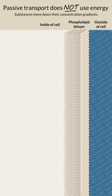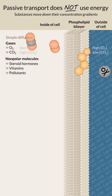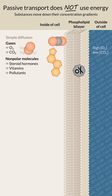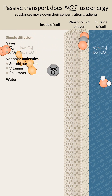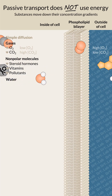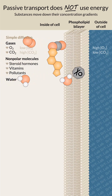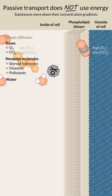Passive transport does not use energy because substances move spontaneously down their concentration gradients. Gases and hydrophobic molecules diffuse easily through the cell membrane. Water molecules are small enough to squeeze through the phospholipid bilayer, but the hydrophobic core impedes movement.